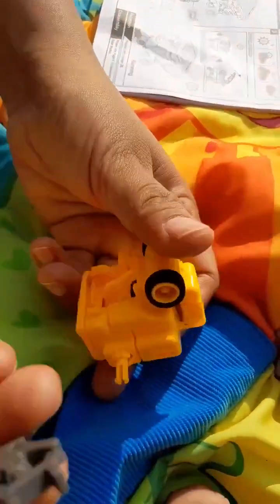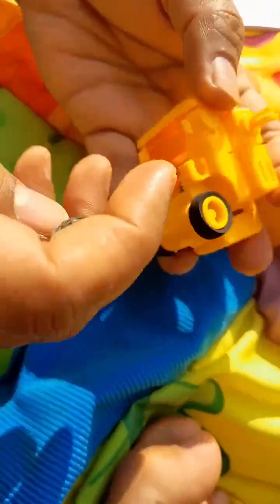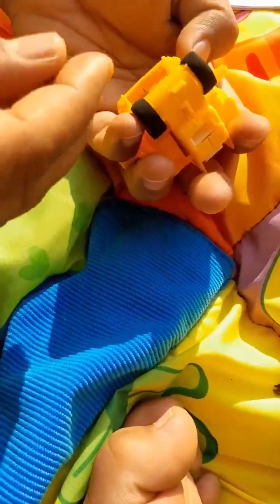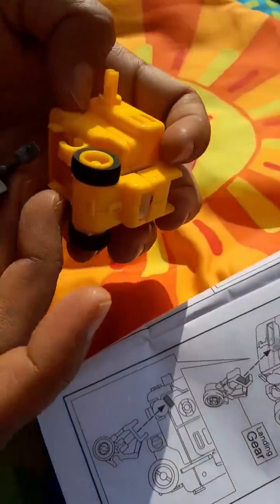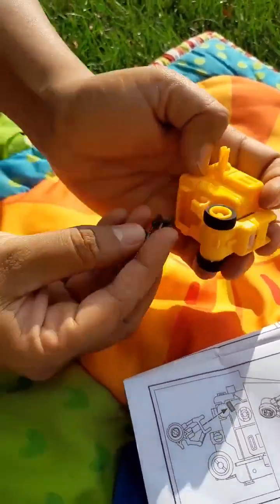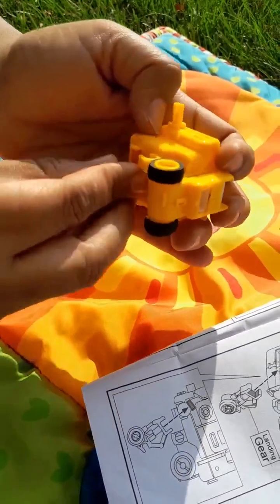First attach this landing gear to this part. Here you can see this rectangular part, rectangular slot. So attach this landing gear like this in this part.